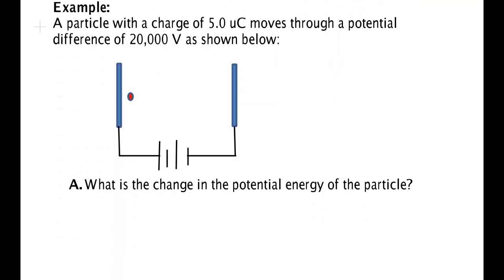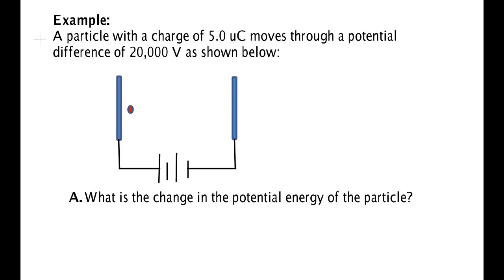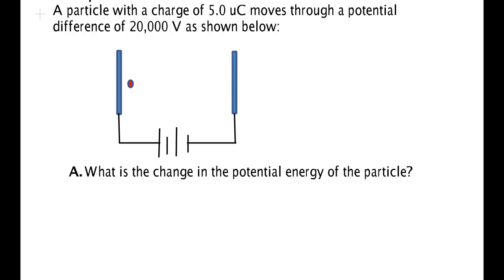Let's take some examples of how we can use electrical potential to find energies. A particle with charge 5 microcoulombs moves to a potential difference of 20,000 volts as shown below. What is the change in the potential energy of the particle? Well, delta U is equal to Q delta V. Now here's one of the things you got to do. That's Q times V final minus V initial.